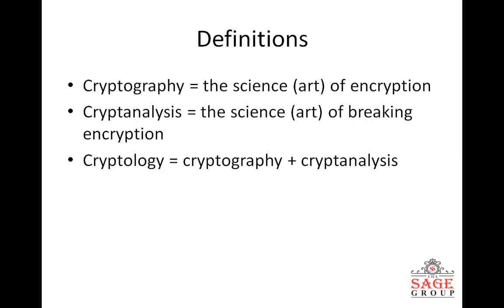What is the definition of cryptography? Cryptography is the science and art of encryption. Cryptanalysis is the science or art of breaking encryption. Cryptology is the field that deals with both cryptography and cryptanalysis. Encryption means securing our data using some technique — either hiding the data, changing the sequence, or covering it with the help of some other data.